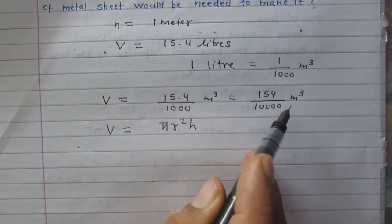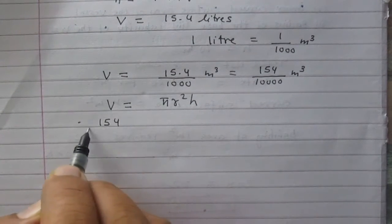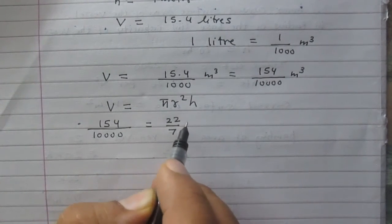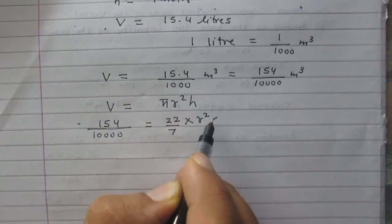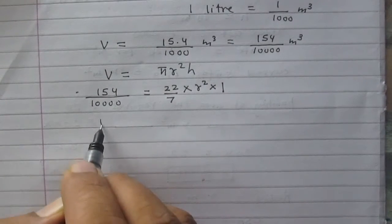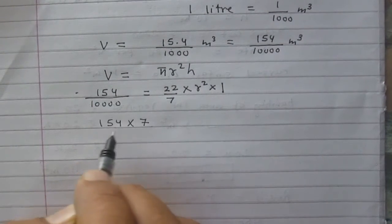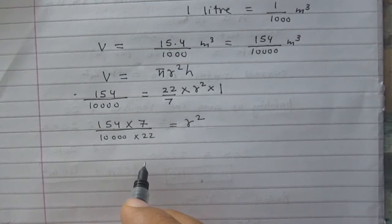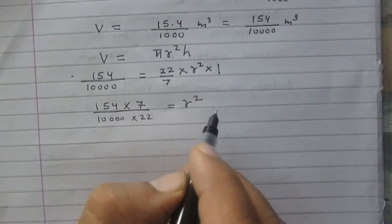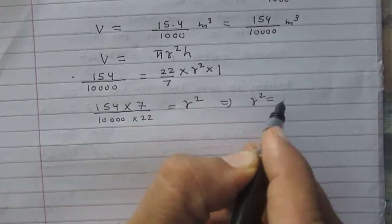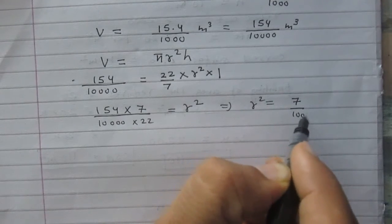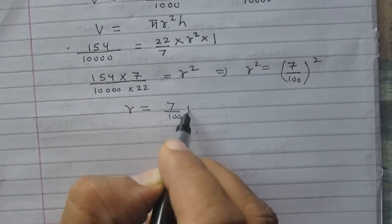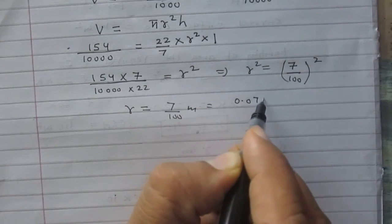After substituting the values: 154/10,000 = (22/7) × r² × 1. So r² = (154 × 7) / (10,000 × 22). After calculation, r² = 7/100 squared, giving r = 7/100 meter, or 0.07 meter.